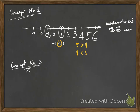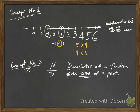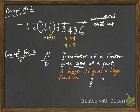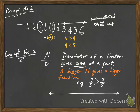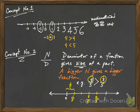Concept number two. When we have a fraction denoted as n over d, where n represents the numerator and d represents the denominator, recall that the denominator of a fraction gives the size of a part. So a bigger n gives a bigger fraction. For example, the fraction four over five and the fraction three over five both have the same denominator five, but four over five has a bigger numerator. So four-fifths is greater than three-fifths. You can visualize this on the number line — dividing the interval between zero and one into five equal parts, four parts is clearly greater than three parts.